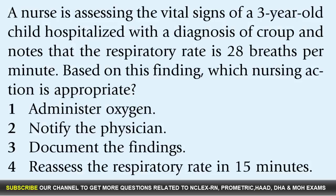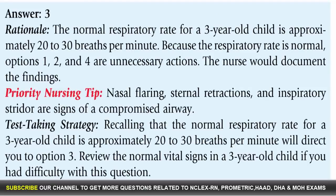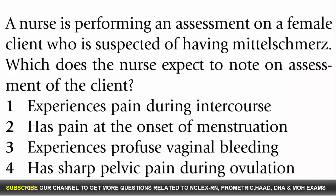Question 86: A nurse is assessing the vital signs of a three-year-old child hospitalized with croup and notes that the respiratory rate is 28 breaths per minute. Which nursing action is appropriate? Options: 1. Administer oxygen, 2. Notify the physician, 3. Document the findings, 4. Reassess the respiratory rate in 15 minutes. Answer: 3. Rationale: The normal respiratory rate for a three-year-old child is approximately 20 to 30 breaths per minute. Because the respiratory rate is normal, options 1, 2, and 4 are unnecessary. The nurse would document the findings.